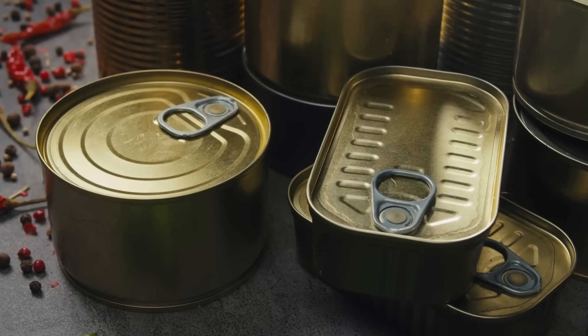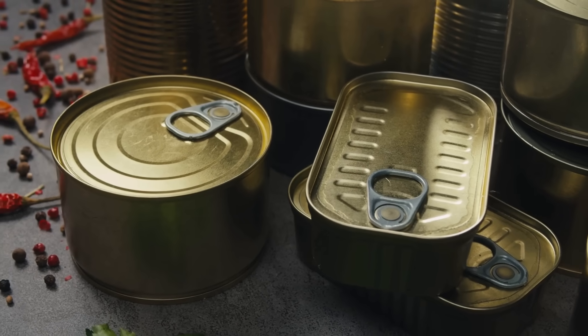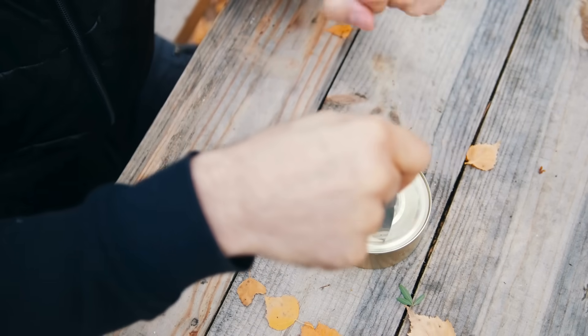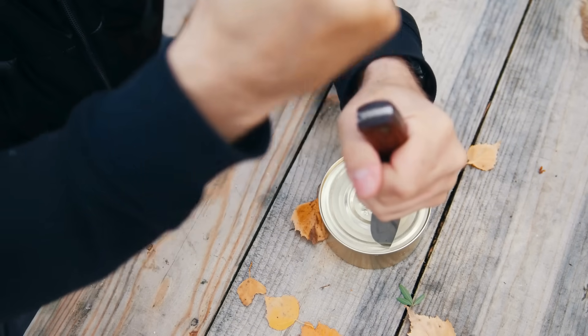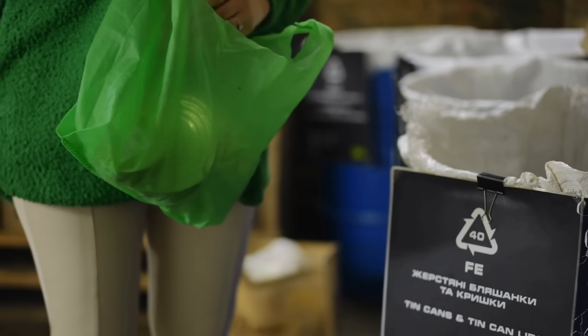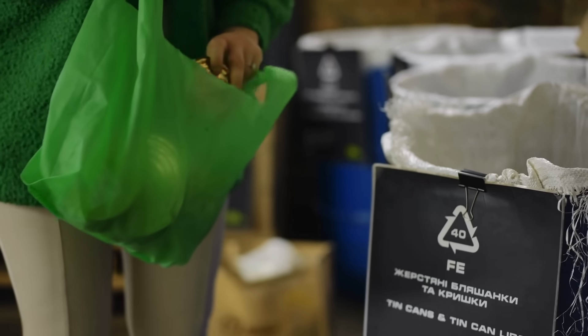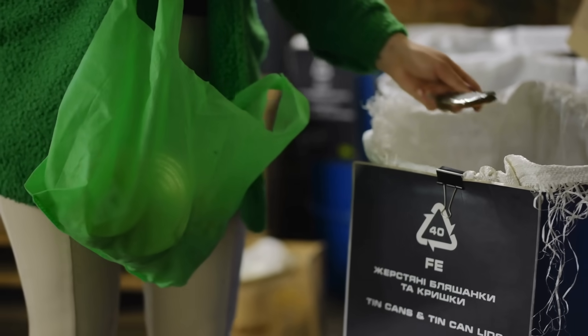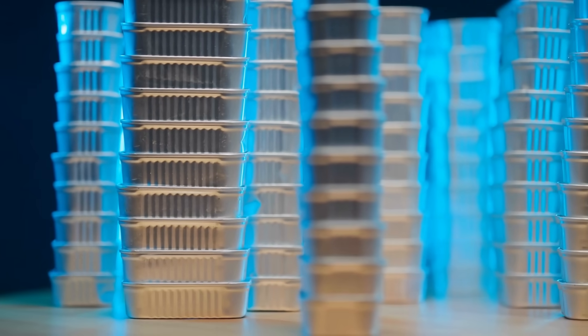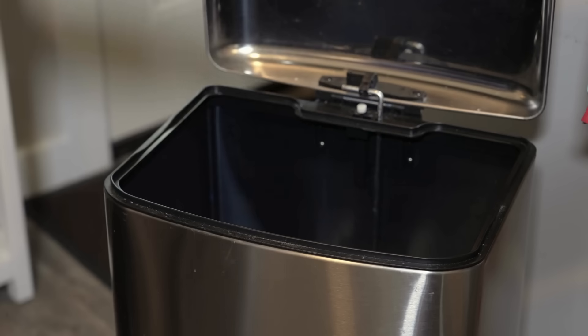If you've ever bent a strip of tin or heard someone play around with a piece of soft metal, you might have caught something strange - a faint, high-pitched sound that almost resembles a squeak or even a cry. It's subtle, unexpected, and oddly fascinating. But it's not just your ears playing tricks on you. That sound is very real. It's what scientists and metal workers call the tin cry.